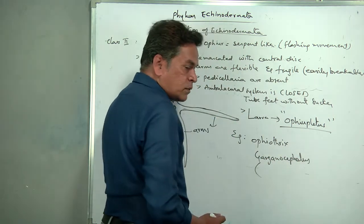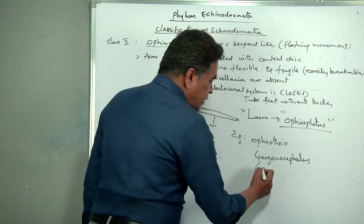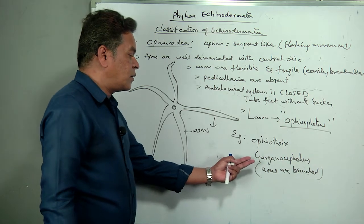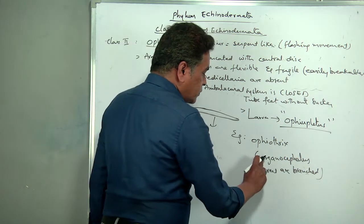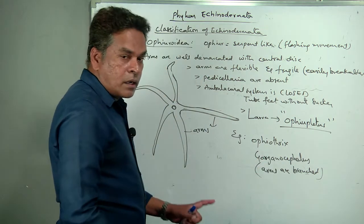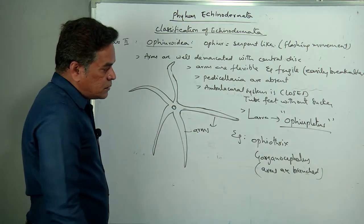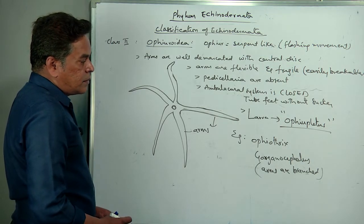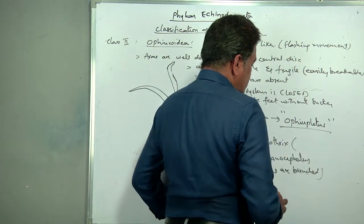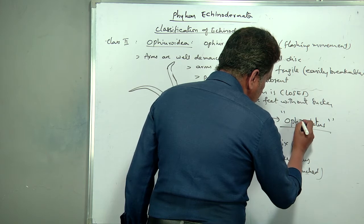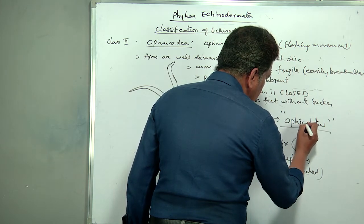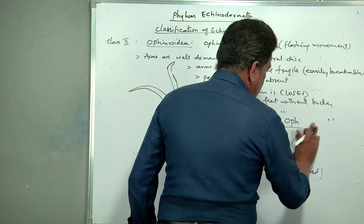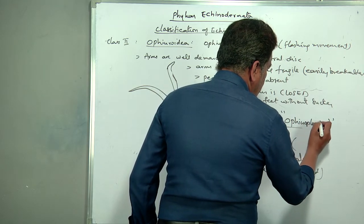Under Gorgonocephalus, the arms are biramous — arms divide again into branches. Ophiothrix and Gorgonocephalus are the examples under Ophiuroidea. The larva is ophiopluteus. In sub-phylum Eleutherozoa, madreporite is generally present towards the downside or oral surface.